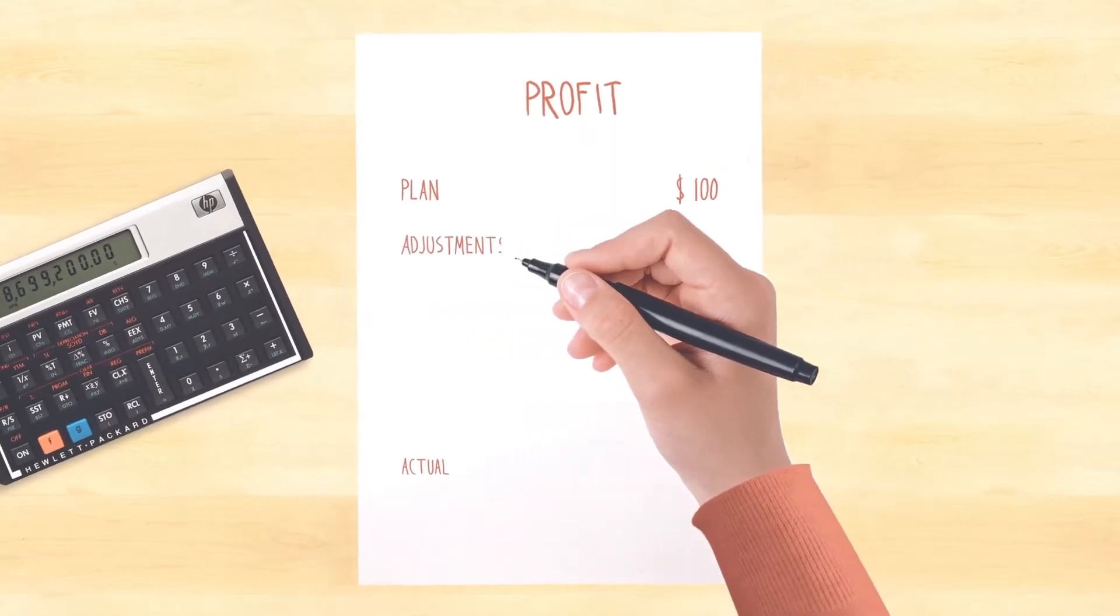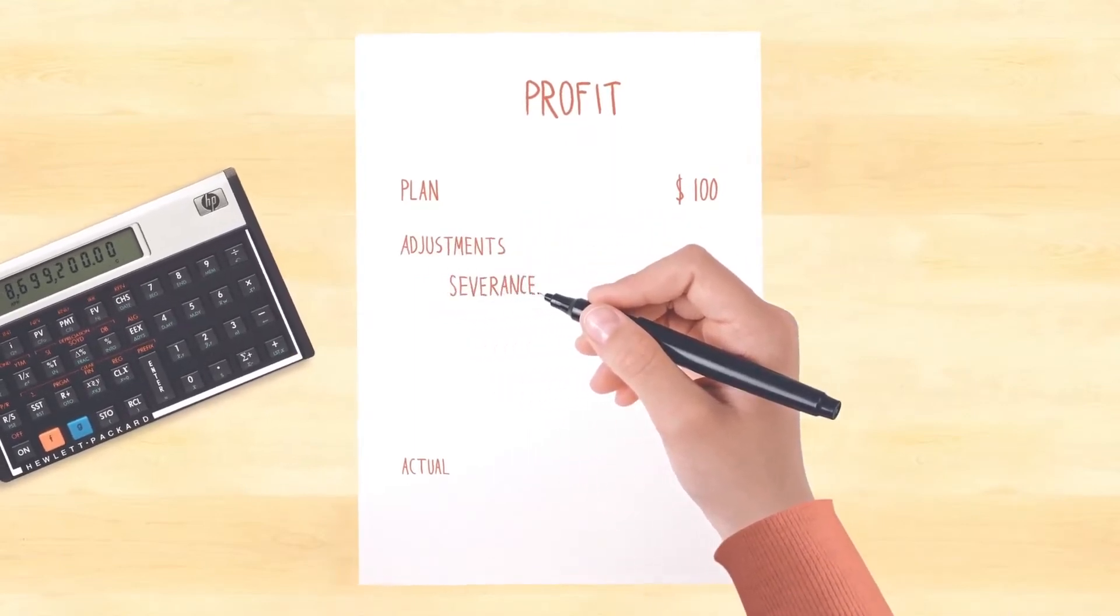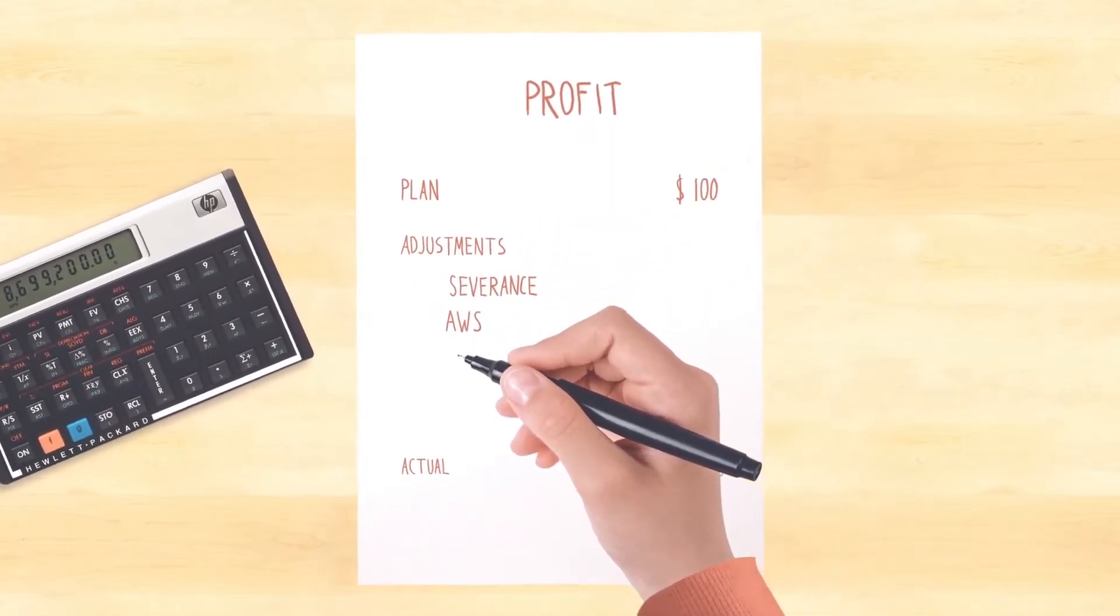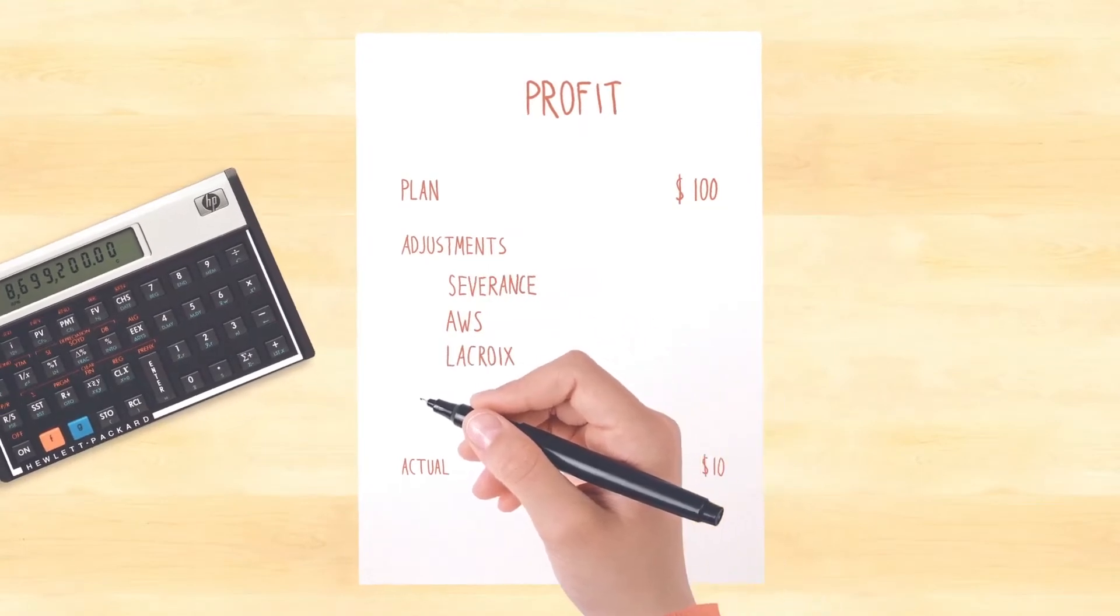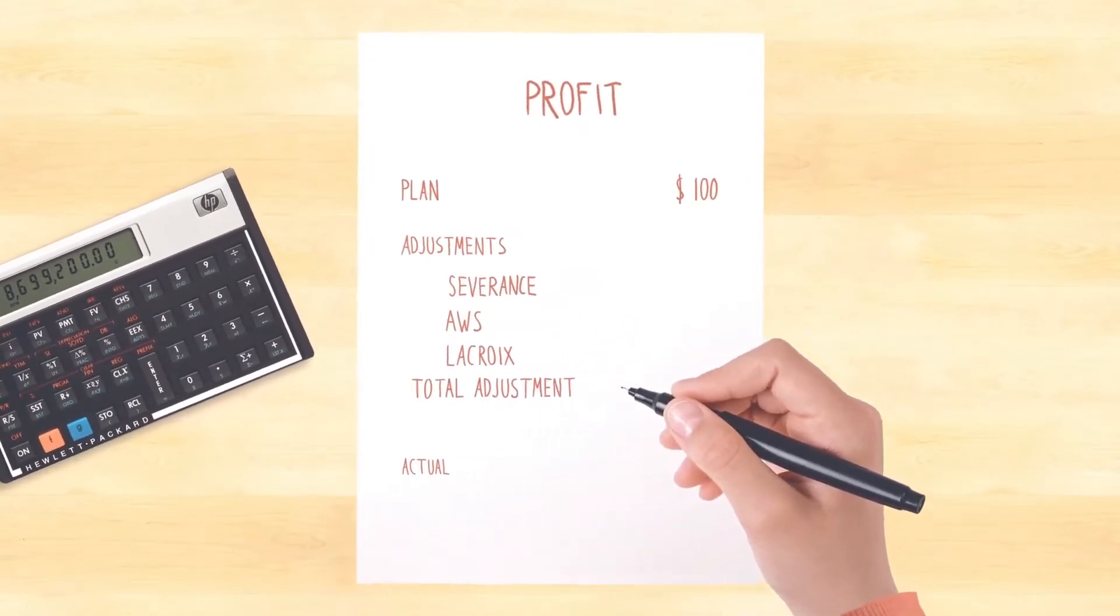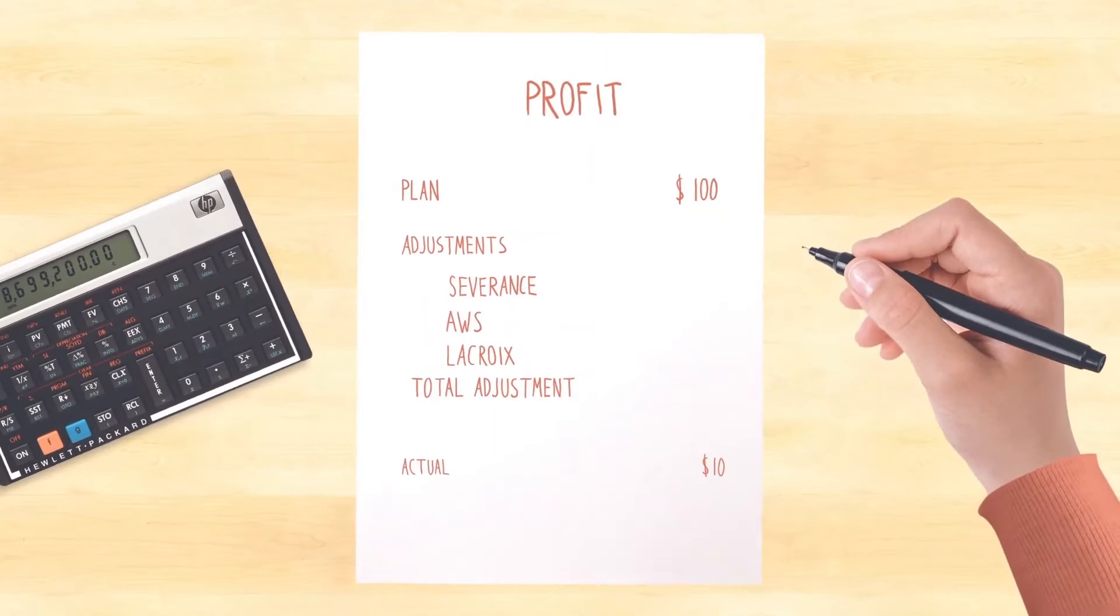Third, fill in the adjustments. Write the name of each of the sources of difference between the number you had planned and the number you actually got. These are the reasons why the number changed.